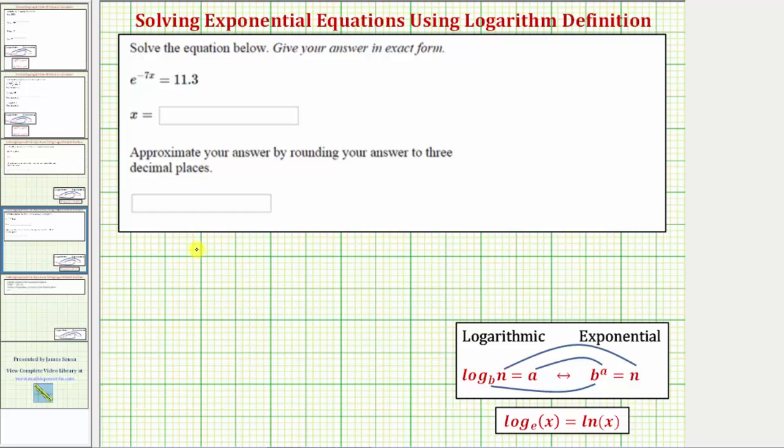So we want to solve the exponential equation e raised to the power of negative seven x equals 11.3. Because the exponential part is already isolated, we could solve this by taking the natural log of both sides of the equation or by applying the definition of a logarithm and write the equivalent log equation.